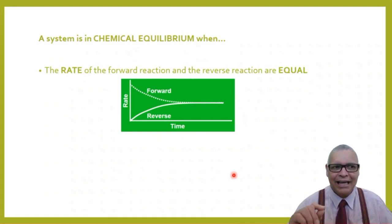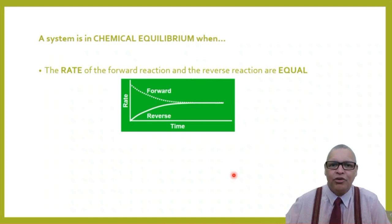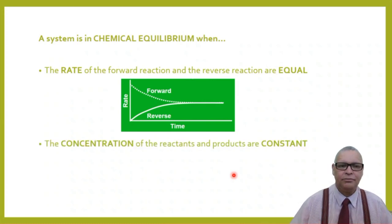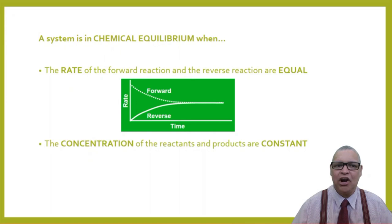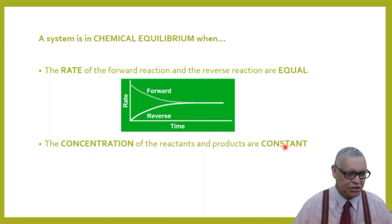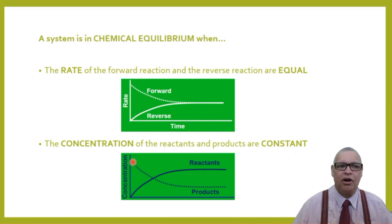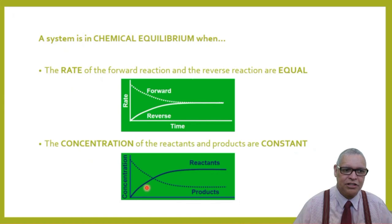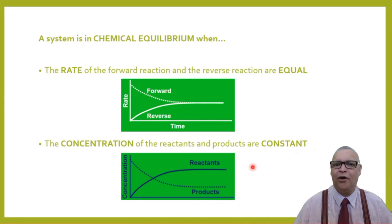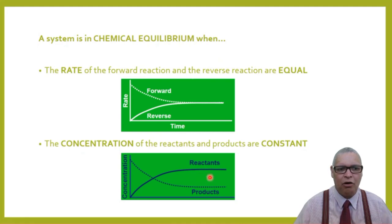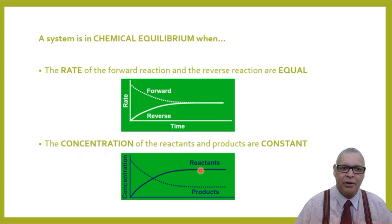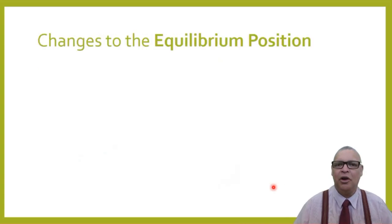For a system to experience chemical equilibrium, the rate of the forward reaction must equal the rate of the reverse reaction. Also, the concentration of the reactants and products should remain constant. On a concentration vs. time graph, the reactants decrease and products increase until both reach parallel plateaus — when we see those parallel planes, equilibrium has been established.